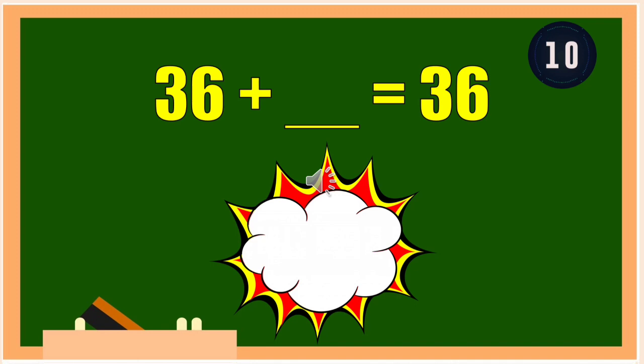36 plus blank is equal to 36. Timer starts now. The correct answer is 0. This is under identity property.